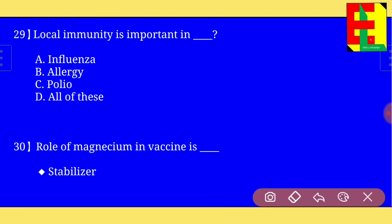Question number thirty: the role of magnesium in a vaccine is — the right answer is — the role of magnesium in a vaccine is as a stabilizer.